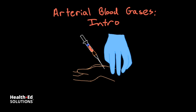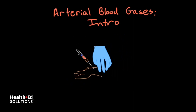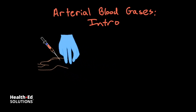The first thing you need to understand is that an arterial blood gas has five different values. These values include pH, and the normal pH is between 7.35 to 7.45 on a scale that goes from 0 to 14 — so it's a very narrow range.